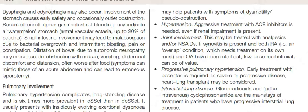Progressive pulmonary hypertension: early treatment with bosentan is required. In severe or progressive disease, heart-lung transplantation may be considered. Interstitial lung disease: glucocorticoids and pulse intravenous cyclophosphamide are the main stay of treatment in patients who have progressive interstitial lung disease.